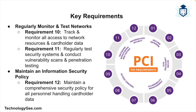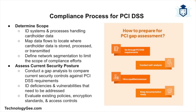For regularly monitoring and testing networks, requirement ten is to track and monitor all access to network resources and cardholder data, and requirement eleven is to regularly test security systems and processes. The final control objective is maintaining an information security policy, with requirement twelve stating you must maintain a policy that addresses information security for all personnel.